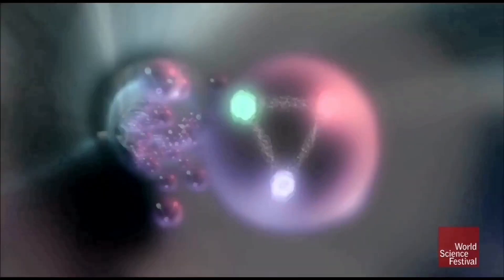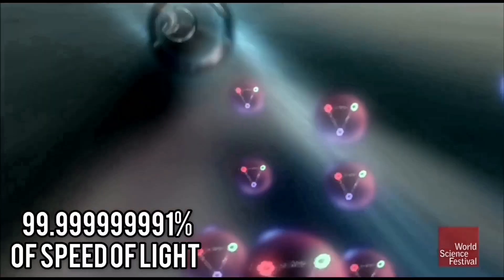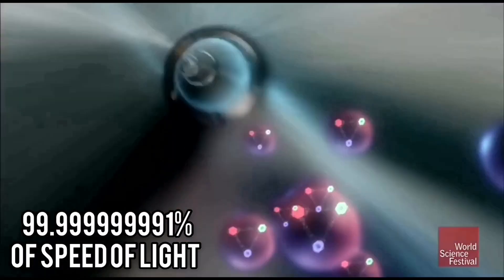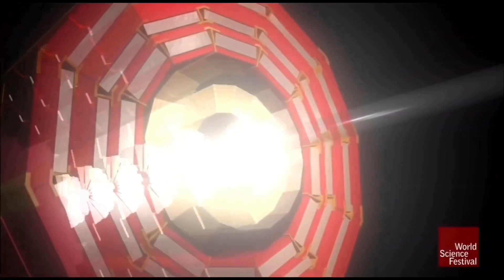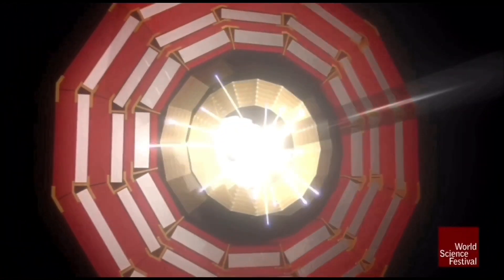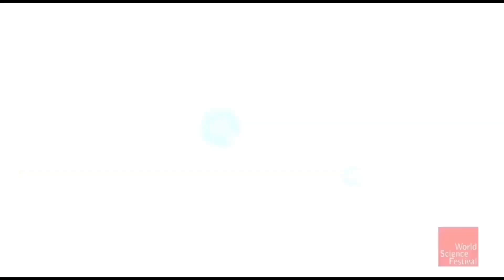This was done by slamming two protons in a Large Hadron Collider close to the speed of light and simultaneously slapping the field. When the field was disturbed and jiggled in the right manner, a speck of this field flicked off, and this was the Higgs boson. So it was proved that the Higgs field exists.